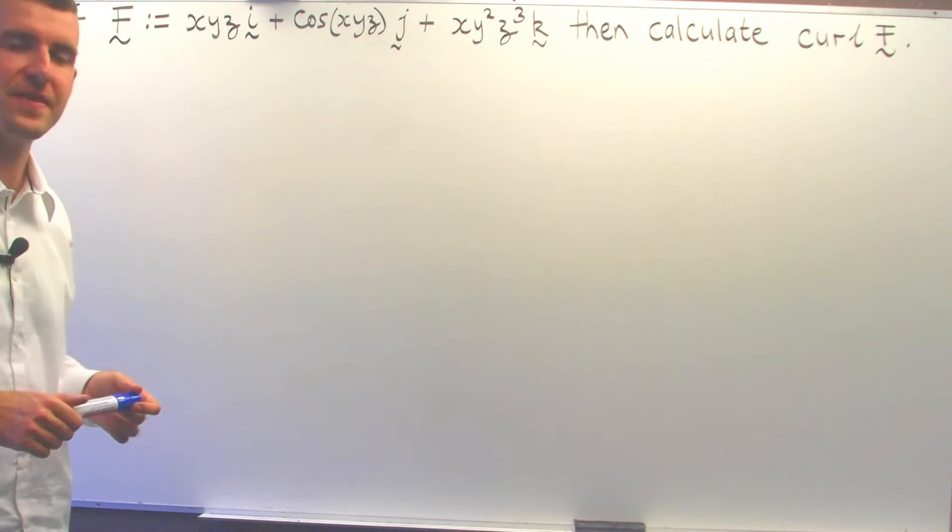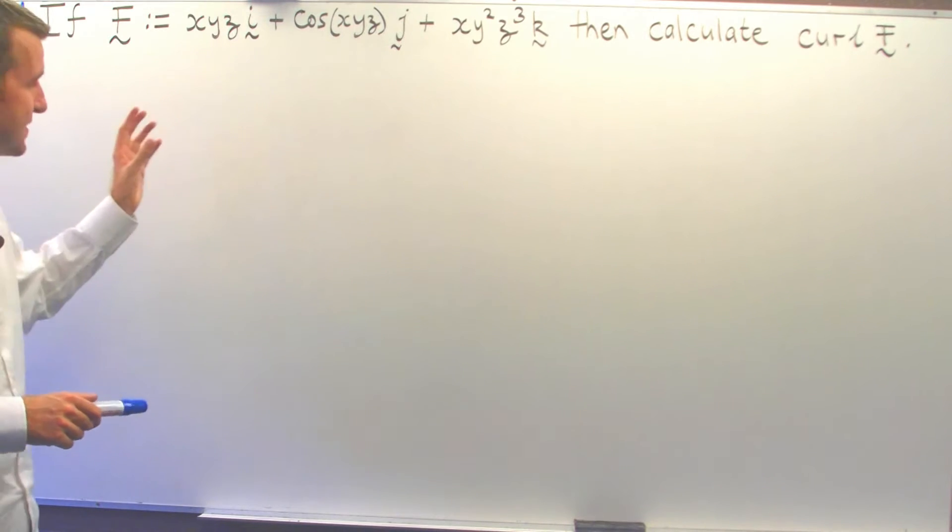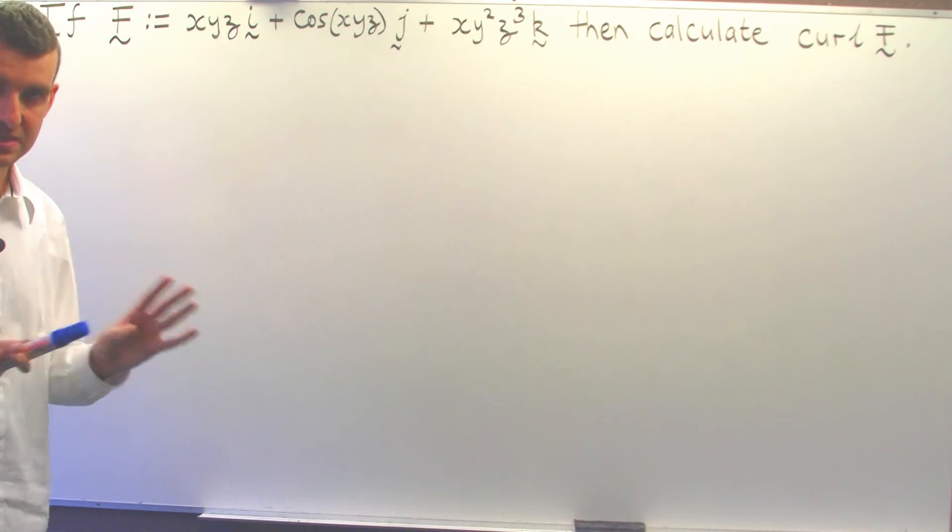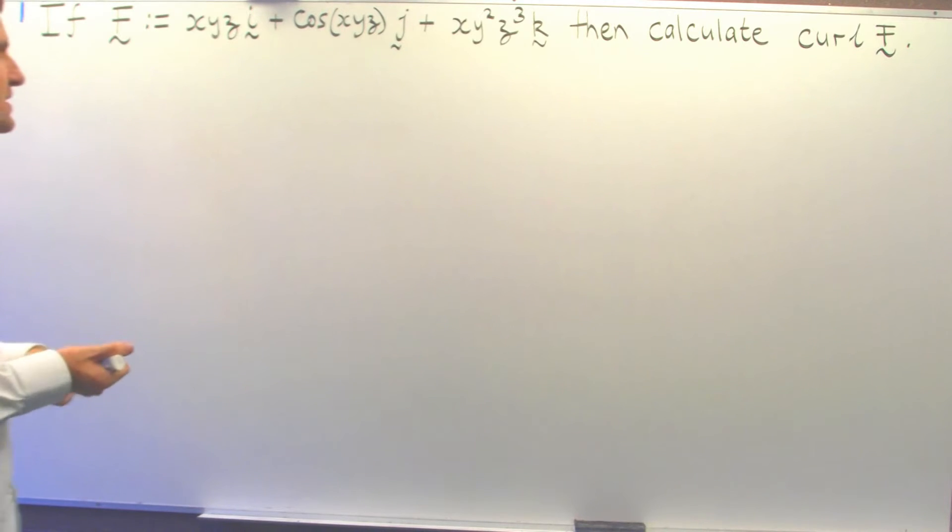I'll talk a little bit more about that at the end, but this example is just simple and straightforward. Let's just take the curl of a vector field. So how do we do it?